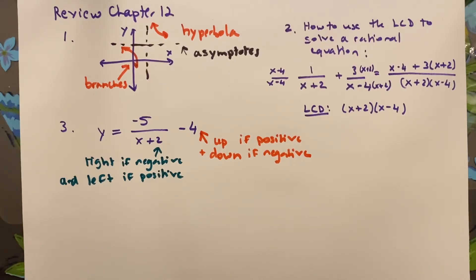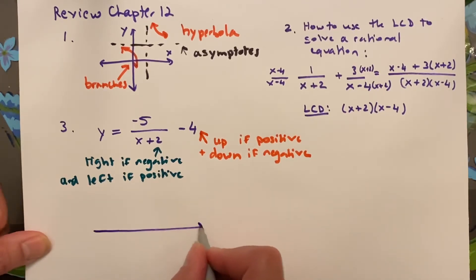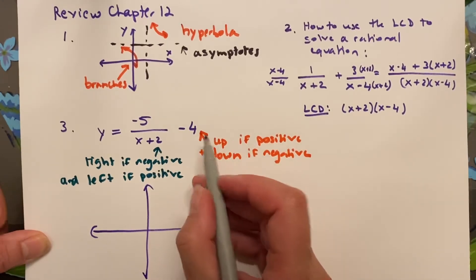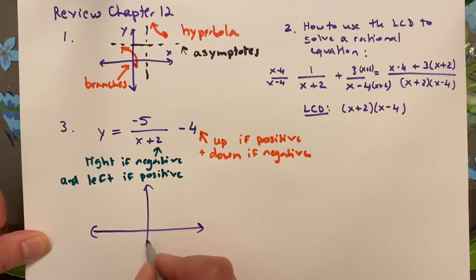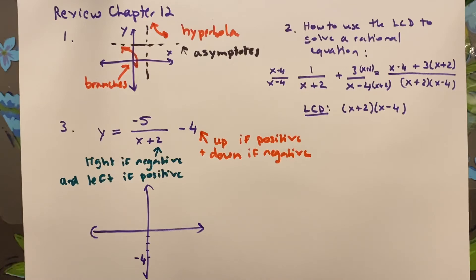So what does that mean? Well, on a graph, and we're not going to do the whole graph, we're just going to do enough to write down those asymptotes. This is negative 4, so it's going to be down 4. So 1, 2, 3, 4, negative 4, down there. I'm going to draw this in red, because it's taking that graph down by 4 units.